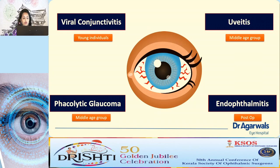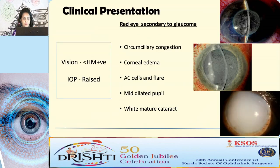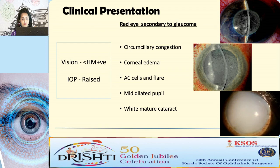In phacolytic glaucoma, patients present with vision less than hand movements, raised IOP more than 30 to 40 mmHg, circumciliary congestion, and corneal edema. AC cells and flares can be identified if the cornea is not cloudy, along with a mid-dilated pupil and a white mature cataract.